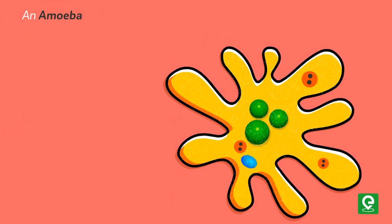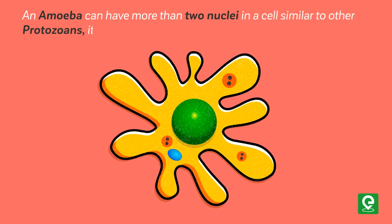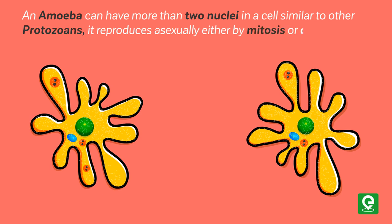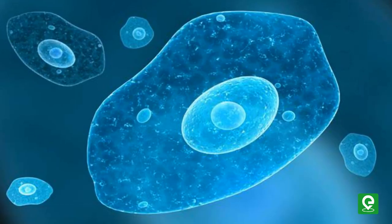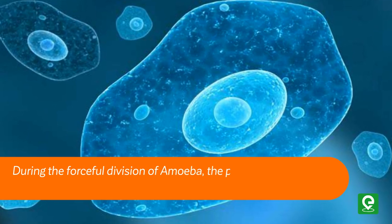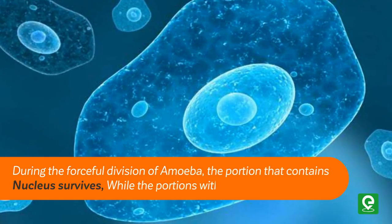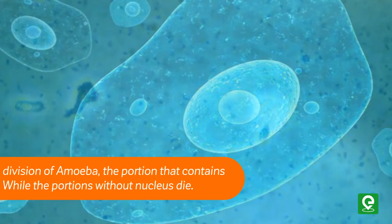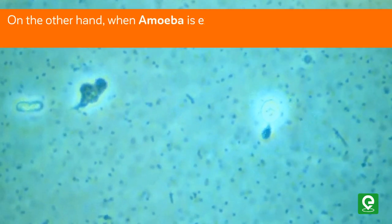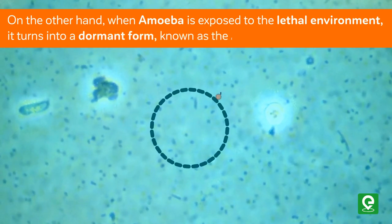An amoeba can have more than two nuclei in a cell. Similar to other protozoans, it reproduces by cytokinesis. During the forceful division of amoeba, the portion that contains the nucleus survives, while the portion without a nucleus dies.